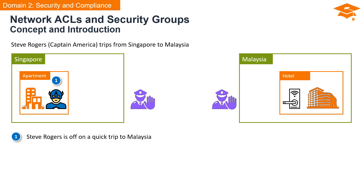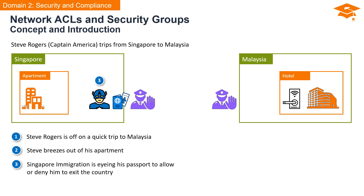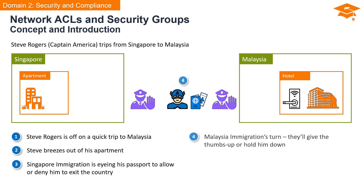Imagine Steve Rogers, known as Captain America, embarking on a quick trip from his apartment in Singapore to Malaysia. Steve breezed out of his apartment in Singapore, heading to Singapore Immigration. At Singapore Immigration, an officer reviews Steve's passport to determine his eligibility for exiting Singapore. Having left Singapore, Steve now finds himself at Malaysia Immigration.